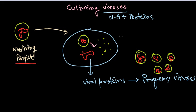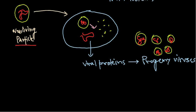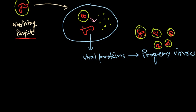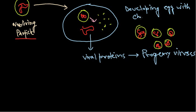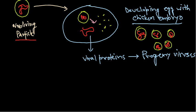We need to grow these viruses in cell culture. Usually in the very beginning, viruses are cultured inside the yolk sac. It is cultured in a developing egg — specifically with a chicken embryo — and that is how we can culture them.